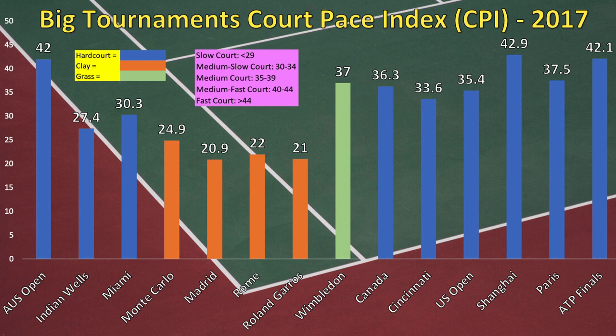Then we have the summer hard courts: Montreal/Toronto and Cincinnati. Canada is a medium court at 36.3. Cincinnati comes in at 33.6 — I was actually really shocked about that. People talk about Cincinnati like it's one of the fastest tournaments on tour, so I was surprised to see it was slower than the US Open, Montreal, and Australia.